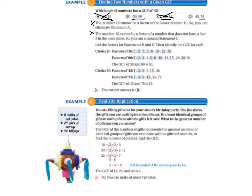So we're left with B and D. So it says list the factors for statements B and D, which they did for us. Choice B, factors of 30, they've listed for us. And our greatest common factor there is 30.